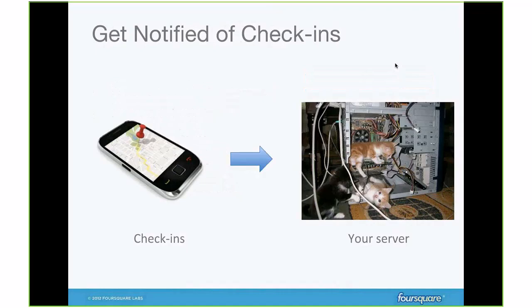The third main thing the API can do is be notified when people check in. If you connect users with your application, whenever one of your users checks in, Foursquare will send your server a ping and you'll be able to react to that check-in — you'll see where the person checked in, when it was, who it was. There have been many interesting apps built on this idea of real-time notification when people check into places.